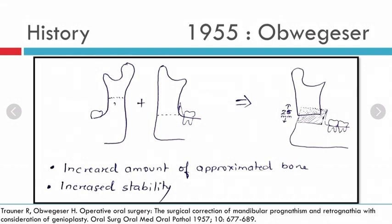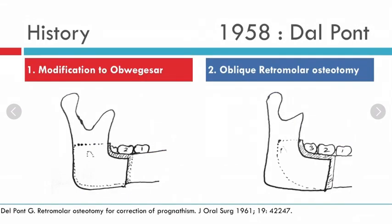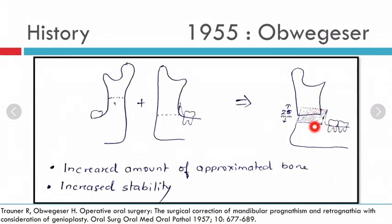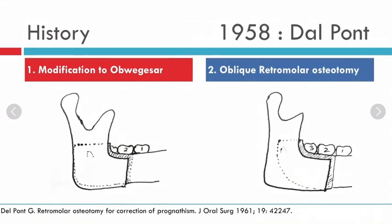Dalpont modified Obwegeser's osteotomy and also introduced the oblique retromolar osteotomy. In Obwegeser's original osteotomy the buccal cut came at the posterior border, giving 25 mm of overlap. Dalpont moved the buccal cut anteriorly to between the first and second molar, which significantly increased the amount of overlap. This was a major change in the osteotomy design.